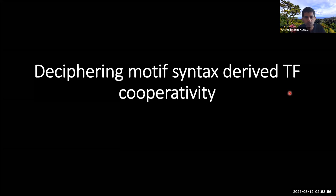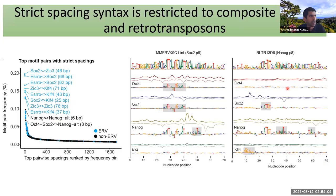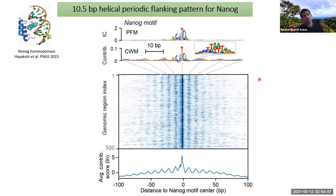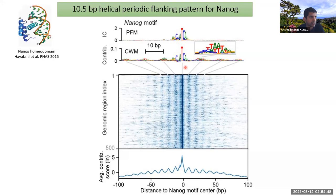Evidence from other experiments shows that proteins like Nanog — from the homeobox family — tend to bind DNA as homodimers on the same side of the DNA helix, even sometimes on nucleosomes. The neural network picks up this 10.5 base pair periodicity because it sees subtle spikes in ChIP-nexus signal every 10.5 base pairs co-localizing with TCA sites — that's how it learns the syntax driving binding.